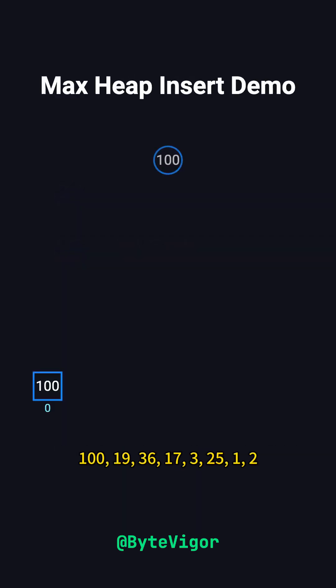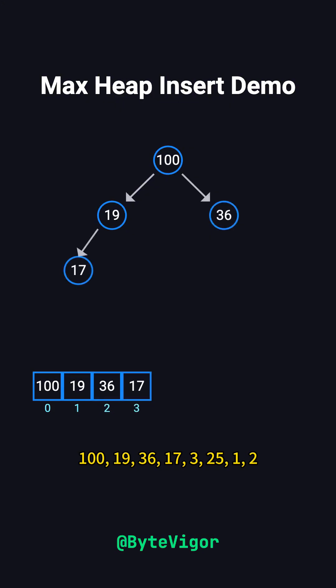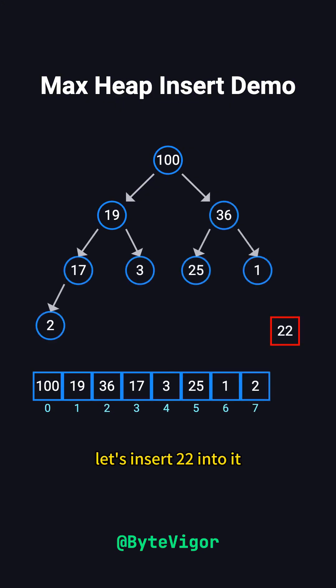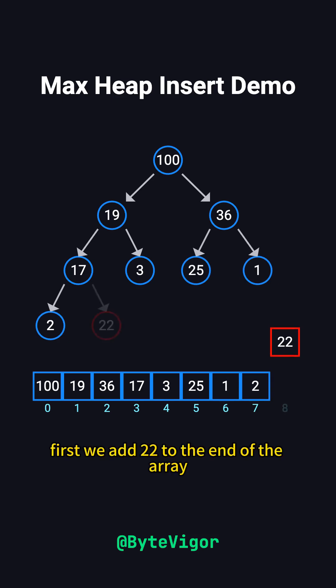For example, suppose we have a max heap: 100, 19, 36, 17, 3, 25, 1, 2. Let's insert 22 into it. First, we add 22 to the end of the array.